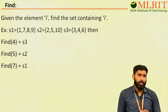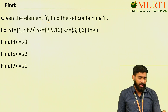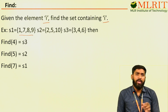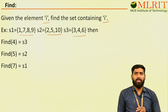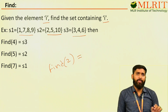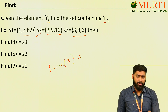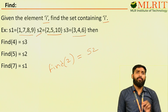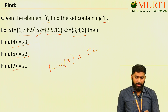The next operation is find. Given the element i, find the set containing i. S1 equals to {1, 7, 8, 9}, S2 equals to {2, 5, 10}, S3 equals to {3, 4, 6}. If I write find(2): given the element i where i is 2, find which set contains i — the answer is S2. This is the find operation. Find(4): 4 is in S3. Find(5): 5 is in S2. Find(7): 7 is in S1.